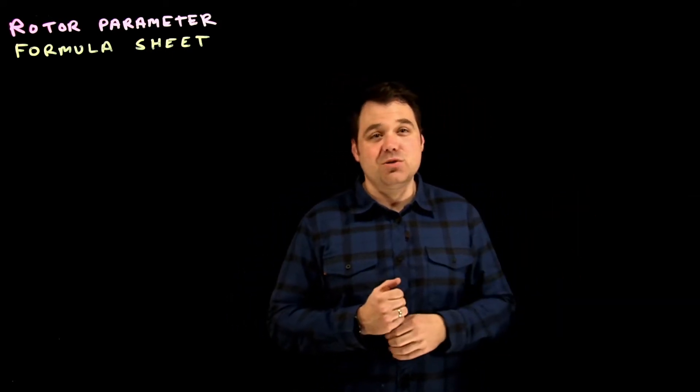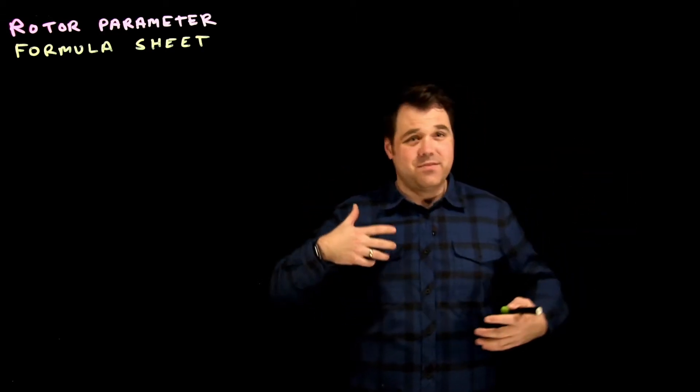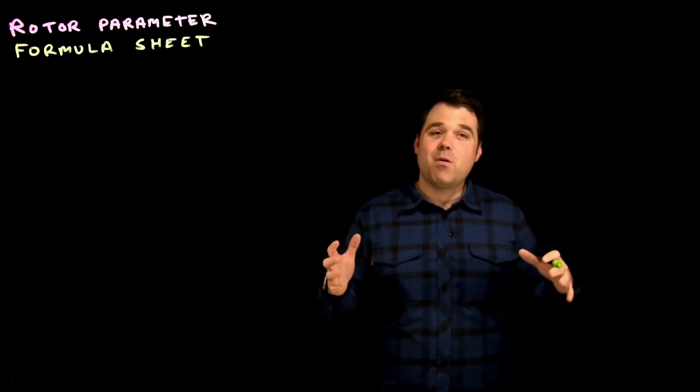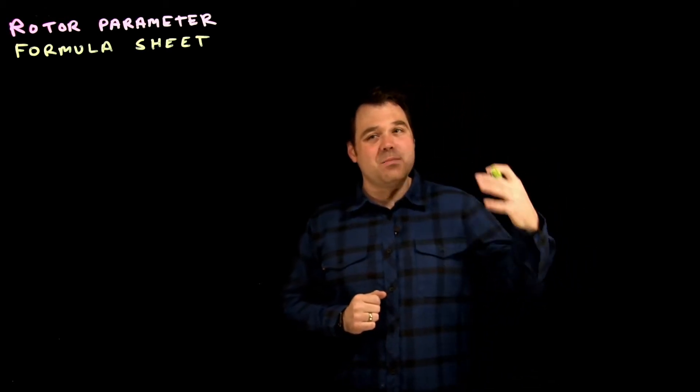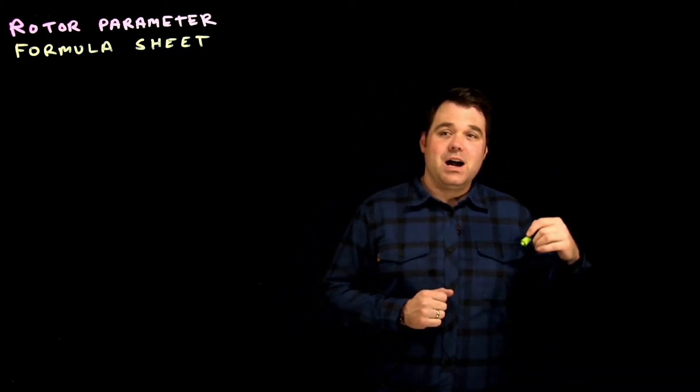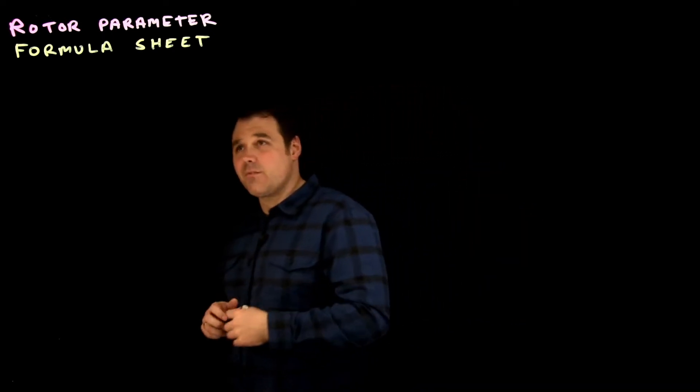So what we're going to do in this really quick video is just build ourselves a really quick formula sheet so that we can quickly remember those formulas. If I were you, I would grab some cue cards and put these onto cue cards, get some definitions, write some examples. But what we're going to do here is really quickly just write down all of our rotor parameter formulas. And then at the end, we'll have a big formula sheet.